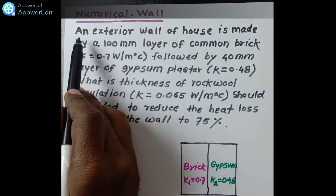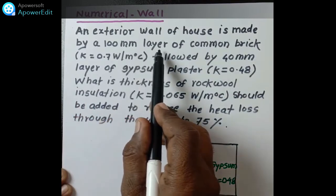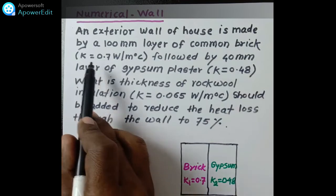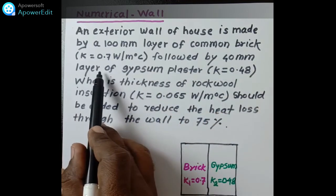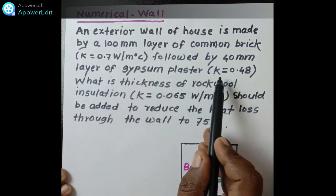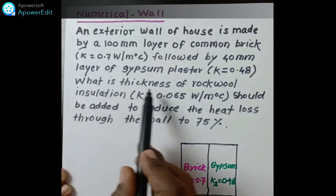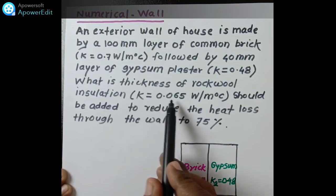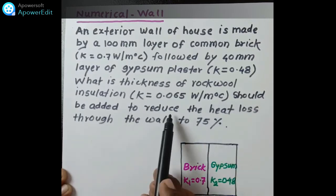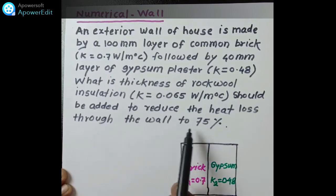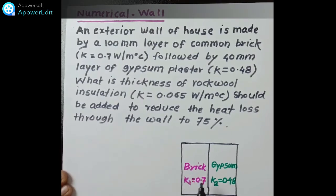The problem statement is: given an exterior wall of a house made by a 100 mm thickness layer of common brick with thermal conductivity 0.7 W/m°C, followed by a 40 mm layer of gypsum plaster with thermal conductivity k = 0.48 W/m°C. What thickness of rockwool insulation with thermal conductivity k = 0.065 W/m°C should be added to reduce heat loss through the wall to 75%? In this numerical there are mainly two layers of material in the wall.